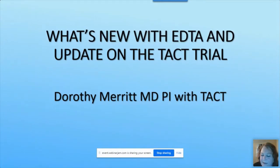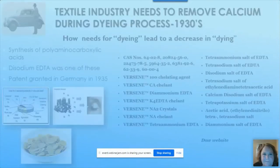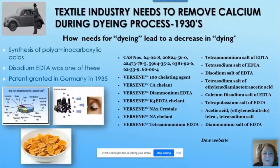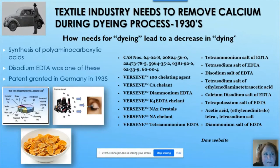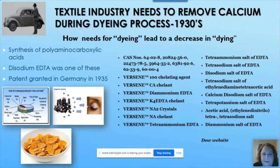EDTA started out during World War I as a substitute for citric acid — it was developed to remove white calcium spots from dying cloth and fabric. It's now used in many things: lipstick, corn flakes, water treatment plants, purple-top tubes — there are at least 14 different versions, and Dow owns the patents. Only two are FDA-approved for use in humans: calcium EDTA and disodium EDTA, which work at different pH values suited for blood.